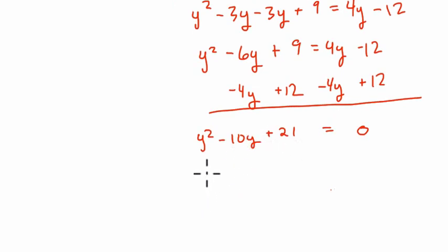So I can factor this into y minus 3 and y minus 7. How do I know that? Well, because negative 3 times negative 7 is positive 21, and negative 3 plus negative 7 is negative 10.